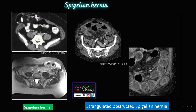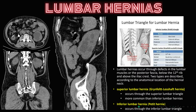Next, spigelian hernias — you already know this is herniation of bowel loops through the spigelian fascia, between the rectus abdominis and transverse abdominis muscle. This is spigelian hernia on the right side, this is spigelian hernia on the left side on MRI. Here also you can see spigelian hernia on the left side, but with abnormal enhancement and adjacent fat stranding with dilated bowel loops inside — this was a case of strangulated obstructed spigelian hernia.